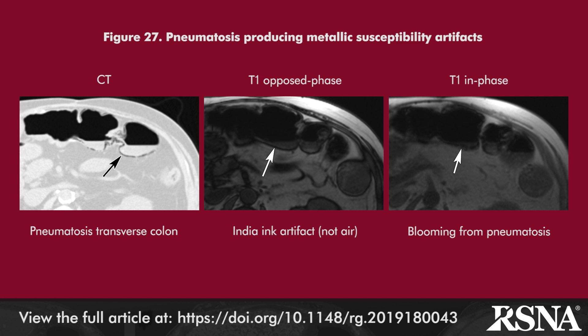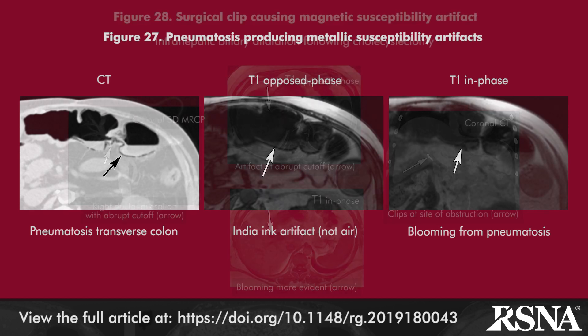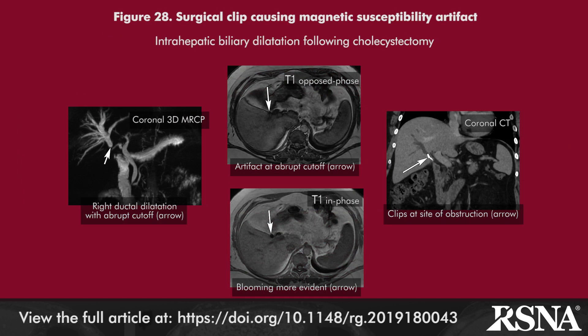Surgical clips, implants, and devices that may be overlooked at CT or obscured at single-shot fast-spin echo or short-TE gradient echo MR imaging are more readily recognized on chemical shift MR as metallic susceptibility artifact.